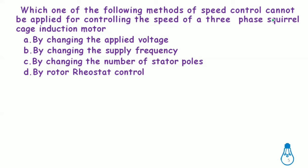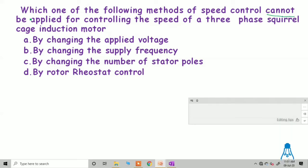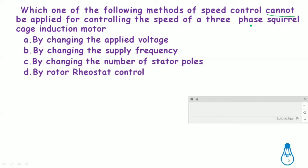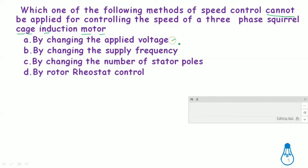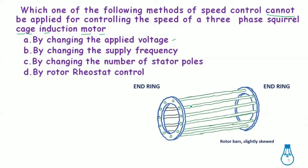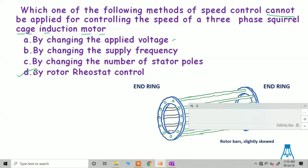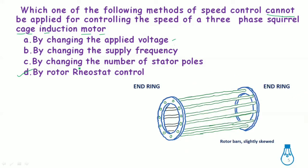Which speed control method cannot be applied to a squirrel cage induction motor? The options are: changing supply voltage, changing supply frequency, changing the number of stator poles, and rotor resistance control. Since the squirrel cage induction motor has completely short-circuited end bars, it is not possible to add external resistance to the rotor circuit. Therefore, rotor resistance control is not applicable — the other three methods are possible.